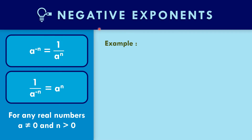Let us apply the negative exponent in example number one: four to the negative two. The negative exponent is in the numerator, so using the rule a to the negative n equals 1 over a to the n, we get the reciprocal: one over four squared. Four times four equals 16, so the final answer is one over 16.